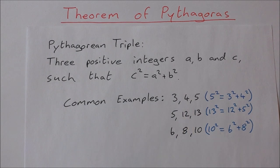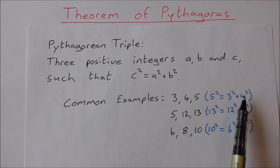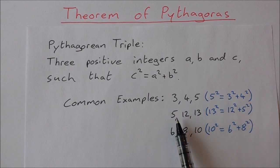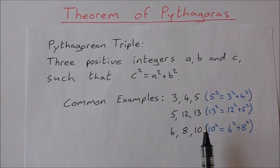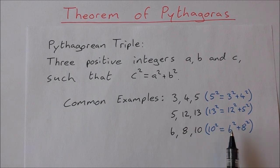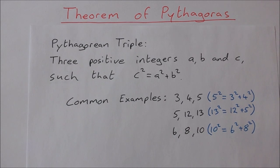A few common examples of Pythagorean triples that hopefully you'll recognize from dealing with right angle triangles are 3, 4, and 5. So 5 squared is equal to 3 squared plus 4 squared. 5, 12, and 13 because 13 squared is equal to 12 squared plus 5 squared. And 6, 8, and 10 because 10 squared is equal to 6 squared plus 8 squared.